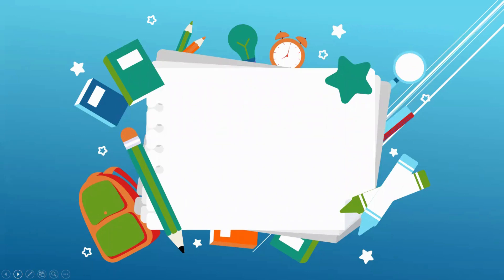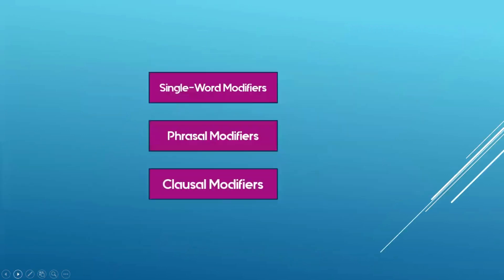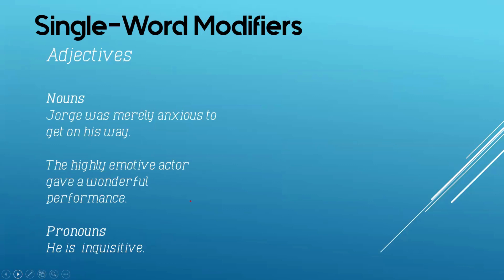Now, sit back, relax, and listen well. There are different types of modifiers. These modifiers can be in different forms, but still functioning as describing words or group of words. We have single word modifiers, phrasal modifiers, and lastly, clausal modifiers. When we say modifier, we are referring to adjectives and adverbs. When we say single word or one word, these are adjectives.